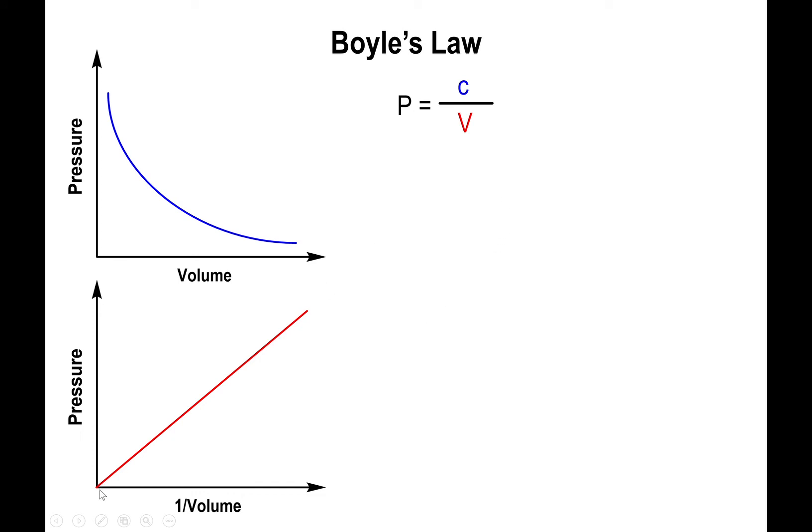We're going to make one assumption: that the y-intercept is zero. If your data is very accurate, the intercept will be close to zero. So we have y being pressure, one over volume being x, and this little c which represents the slope of the line.